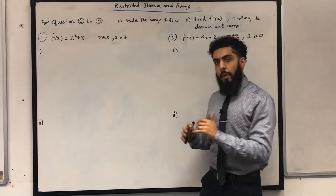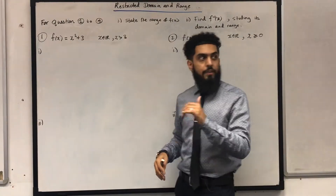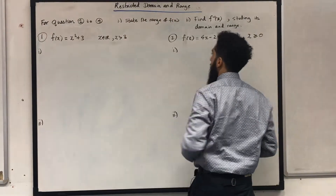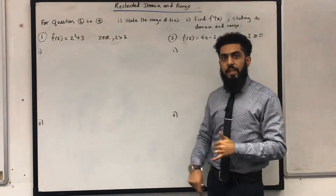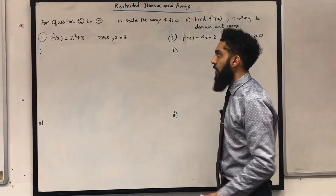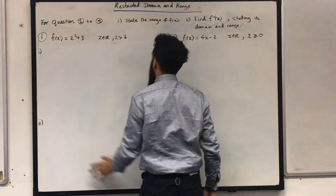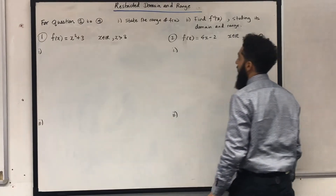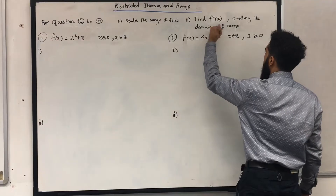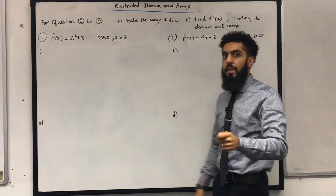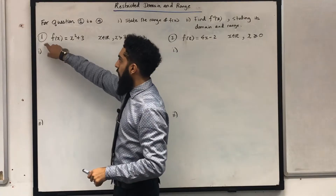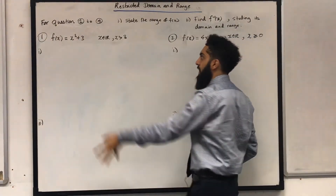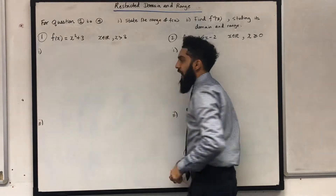I've spoken to many students and a lot of them find this particular topic challenging: restricted domain and range. I'm going to go through this topic in this video tutorial. For questions 1 to 4, I need to answer part 1 and part 2. Part 1: state the range of f of x. Part 2: find f inverse of x, stating its domain and range. For question 1, I have the function f of x equals x squared plus 3, x is a real number, restriction x is greater than 3.